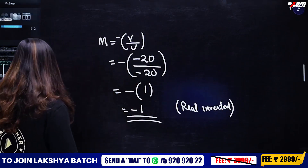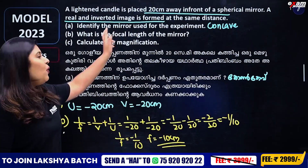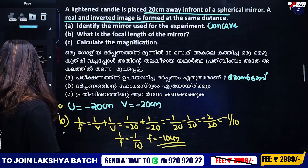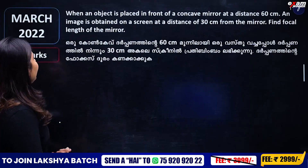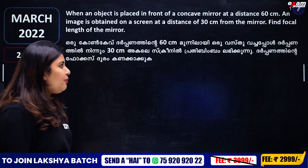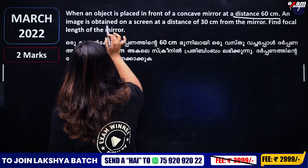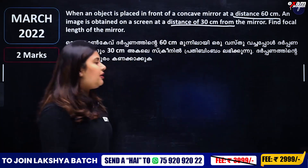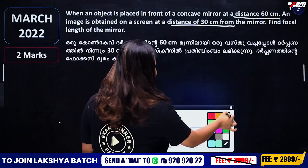So if you think about 3 questions, you will see that it is 3 marks. When an object is placed in front of a concave mirror at a distance of 60 centimeter and an image is obtained on the screen at a distance of 30 centimeter from the mirror, find the focal length.